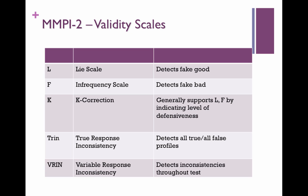The F scale is the opposite of that. It's called the infrequency scale, but a lot of people refer to this as the fake bad scale, because people with elevations on this seem to endorse all kinds of psychopathology. Sometimes it's so high that you can't really trust it. Perhaps they're motivated to have a very clinical profile — imagine someone on trial trying to establish themselves as criminally insane. But you might also see elevations here simply because someone has a lot of genuine problems.